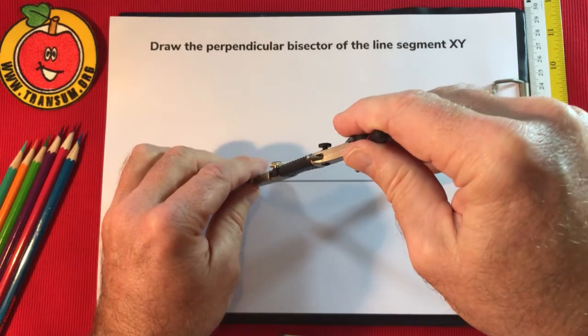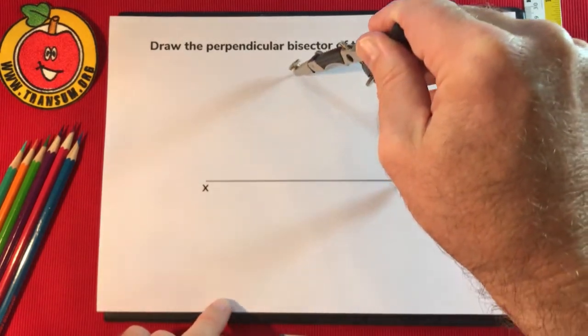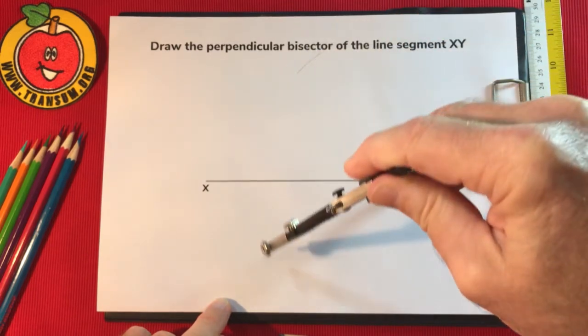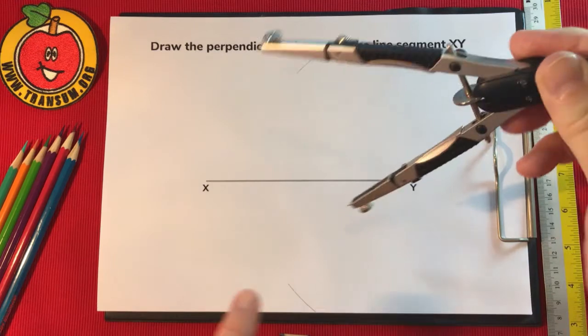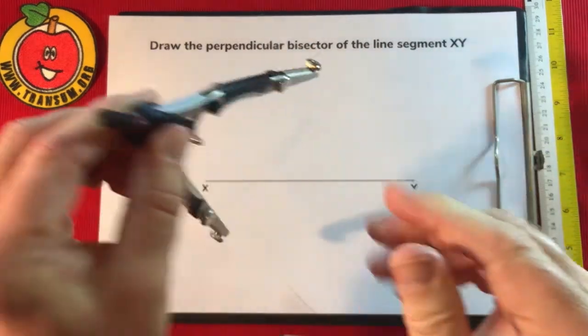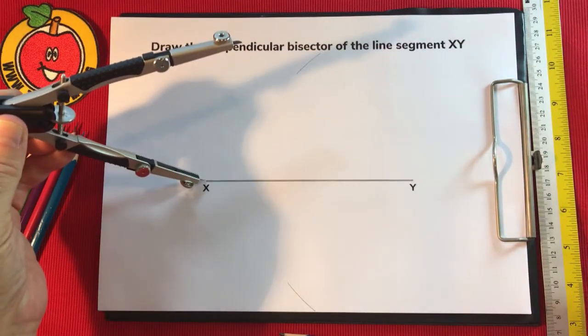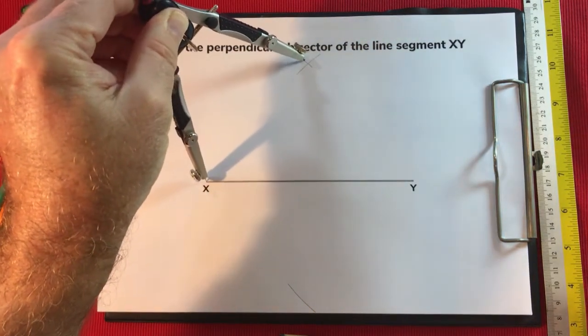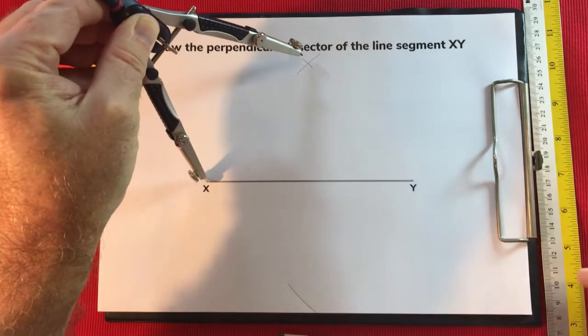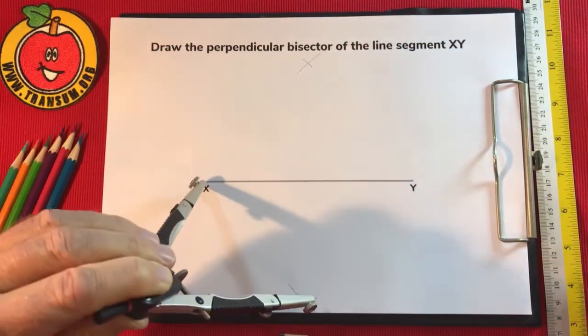So I'm going to set mine to about here, and then I'm going to draw an arc above and an arc below the line. Now it's important you keep the radius of the compasses the same, put the point in X, and then draw a small arc so that it crosses the arc that you previously drew.